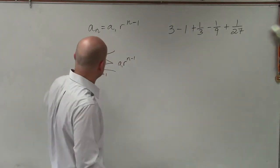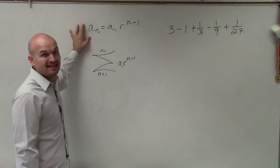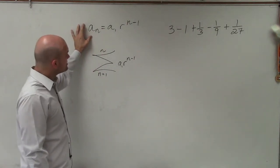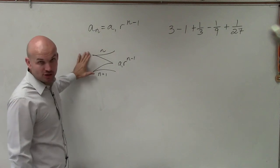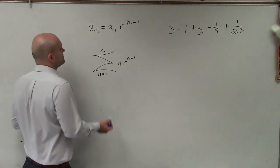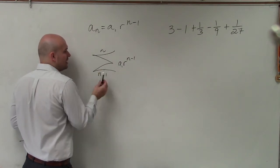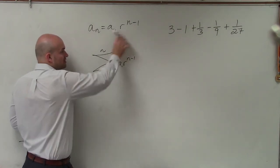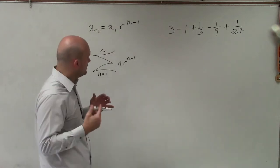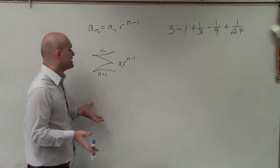What I have for you is the general rule for the nth term of a geometric sequence, as well as the summation notation. You can see summation notation has this sigma, which represents sum. We have where we start, where we're going to end, as well as the rule, which came from right here.